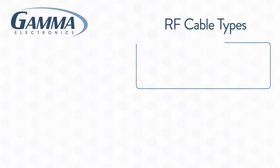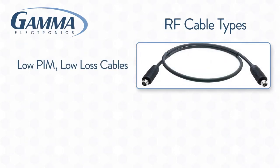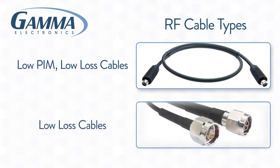Gamma Electronics manufactures two types of cables: Low-PIM, low-loss cables for LTE deployments and low-loss cables for all of your other RF cable needs.